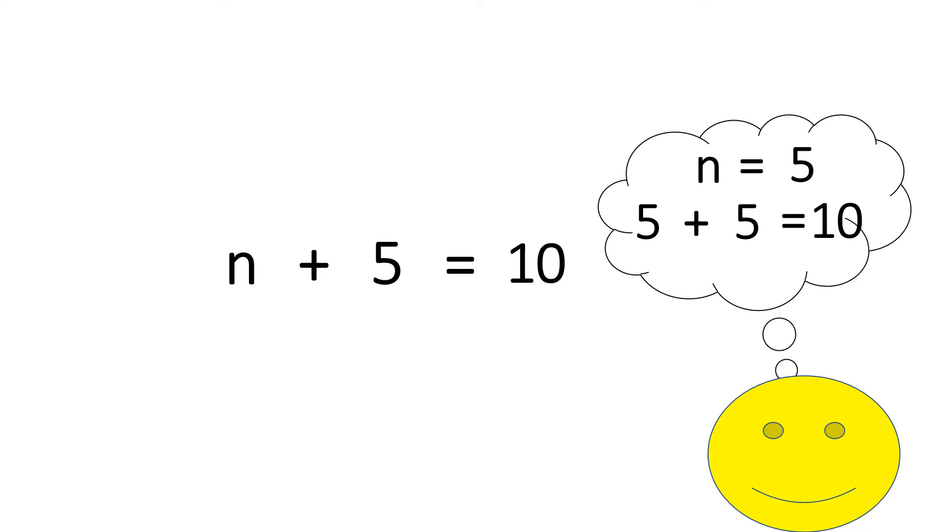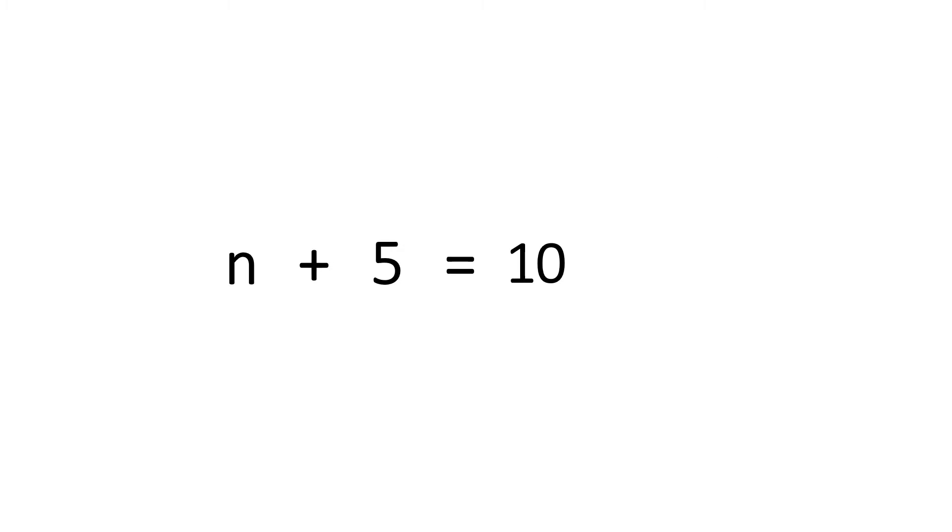However, we have to write it out and show our work. The way we show our work is by balancing both sides. Since we have +5, we're going to subtract 5, and we're going to go to the answer, 10, and also subtract 5. These two fives equal zero, so we cross them out. 10 - 5 = 5, and we bring down the n, so n = 5. Pretty simple.